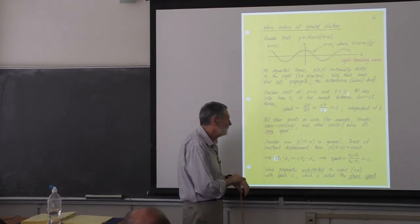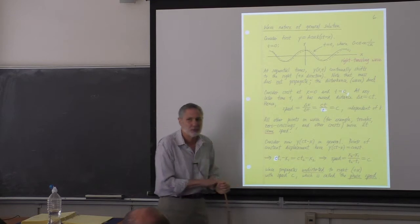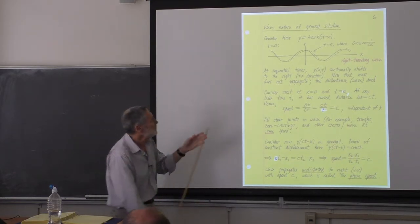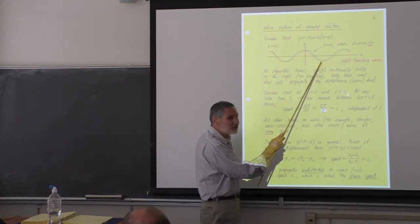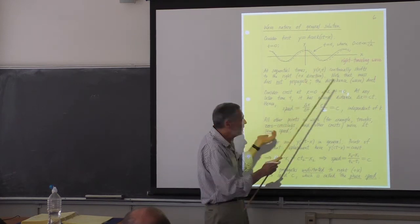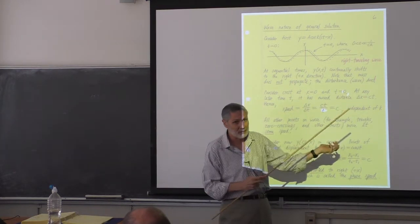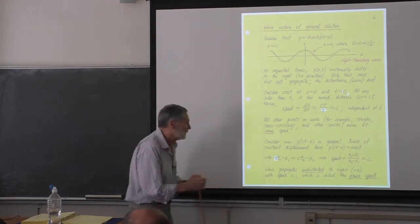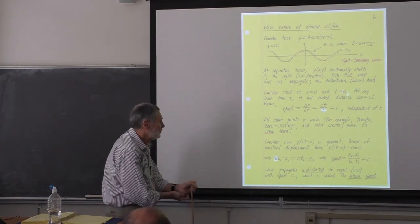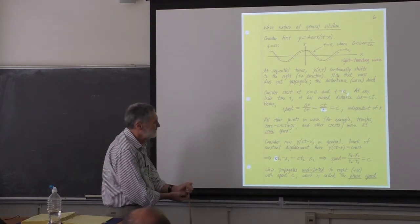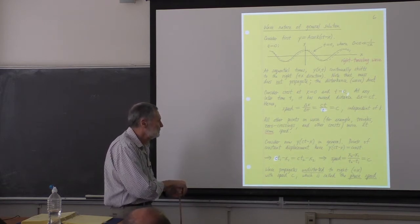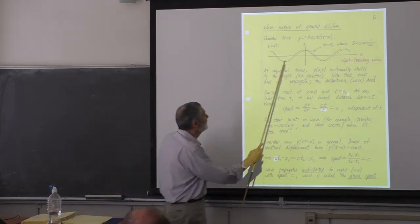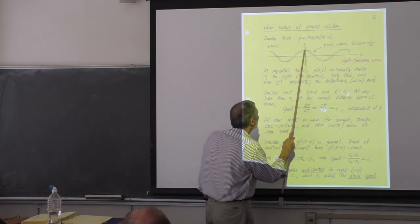This is a general proof for a string — any waveform satisfying the wave equation, with small amplitudes and small slopes, has every point traveling with the same speed. So the waveform propagates undistorted. This is a property of the wave equation, and not all wave equations have that property.